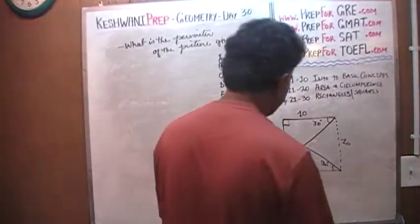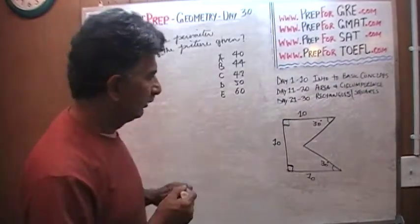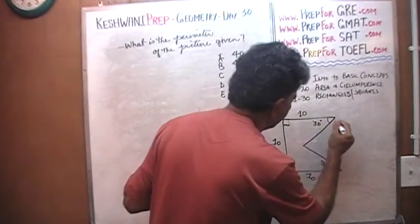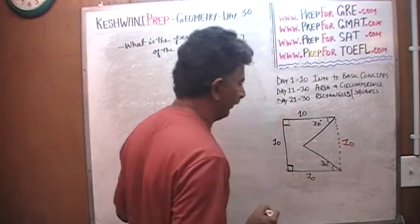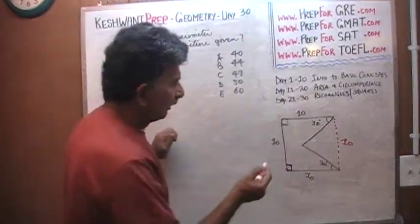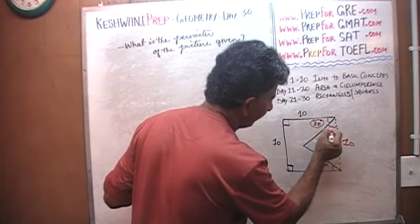Actually let me do the solution in a different color, let me do the solution in the red marker so you can see it, you can tell the difference between what was given and what we are doing right now. So this side must also be 10, very simple, very straightforward. Now, we are told that this angle is 30, but if this angle is 30, then this angle must be 60.